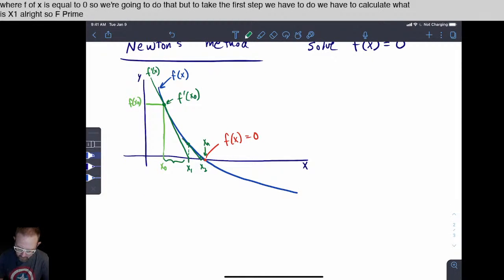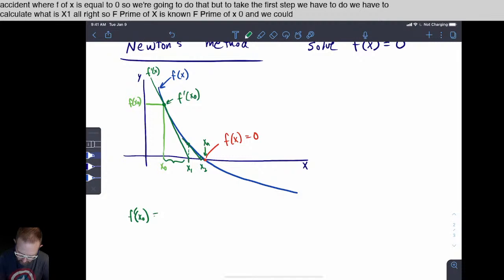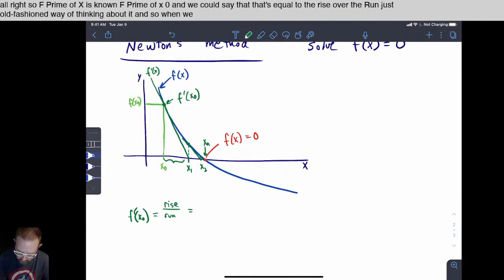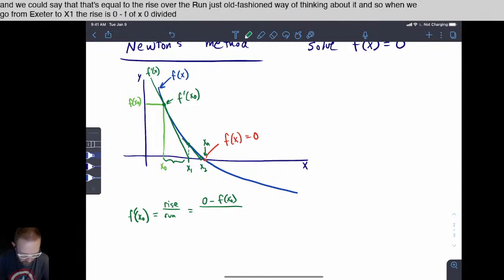All right, so f prime of x is known, f prime of x zero. And we could say that that's equal to the rise over the run. Just an old fashioned way of thinking about it. And so when we go from x zero to x one, the rise is zero minus f of x zero divided by x one minus x zero.